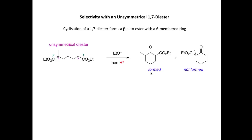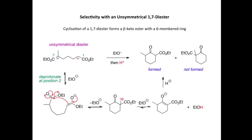First, we'll look at how this six-membered ring is formed and examine the reaction mechanism in detail. The first thing that happens is we deprotonate at the alpha position at position 2 and form this ester enolate ion. This ester enolate ion can then cyclize — we take the electron density and attack the carbonyl group of the other ester, kicking out OEt minus as a leaving group. Again, both the deprotonation and the cyclization steps will be reversible.